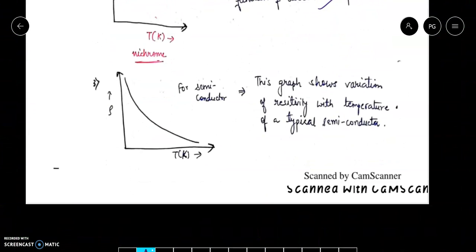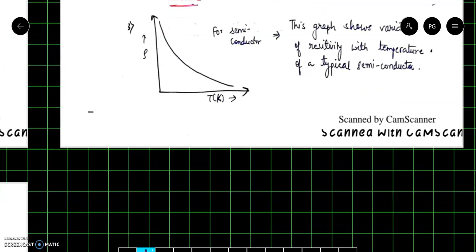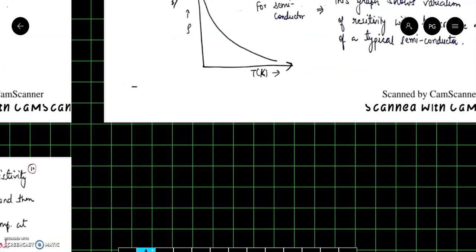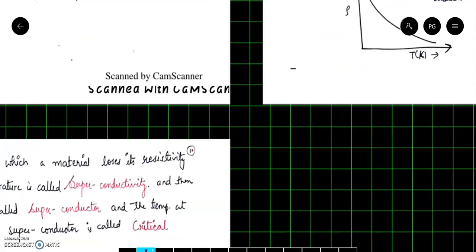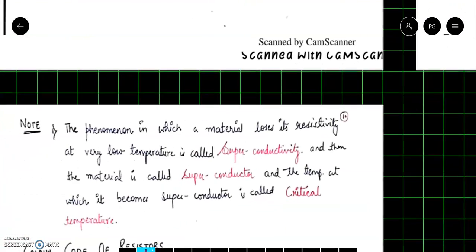The third graph shows the variation for a typical semiconductor. For a semiconductor, as we increase the temperature, the resistivity is reduced. So this is the variation of the graph for a semiconductor.